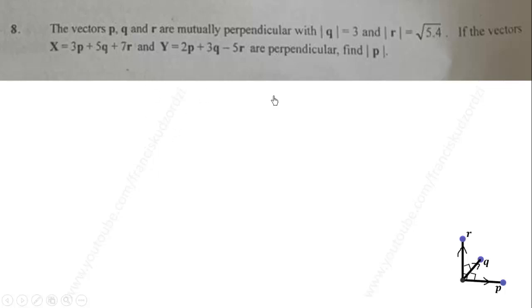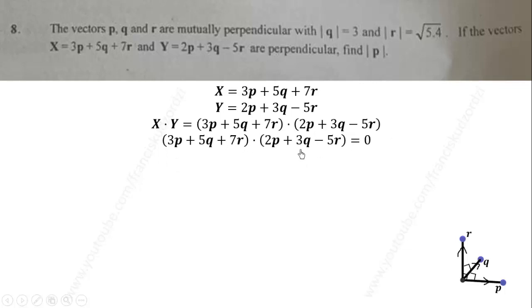We are also given two vectors X and Y, and we are told they are also perpendicular. So we can dot them. X dot Y equals 3P plus 5Q plus 7R dot 2P plus 3Q minus 5R. Because X and Y are perpendicular, the angle between X and Y is 90 degrees and their dot product should give us 0. So this expression should equal 0.